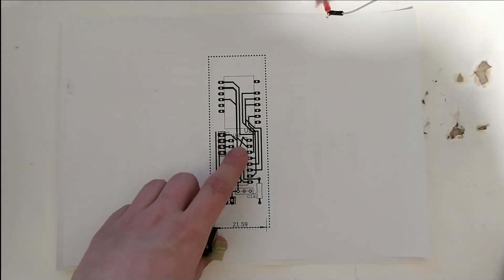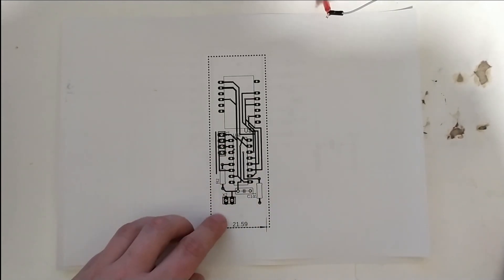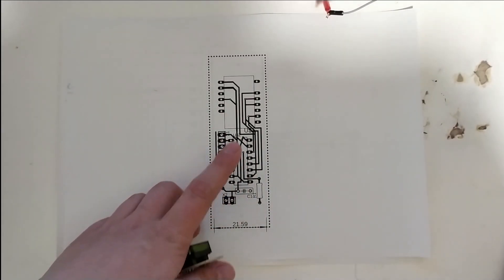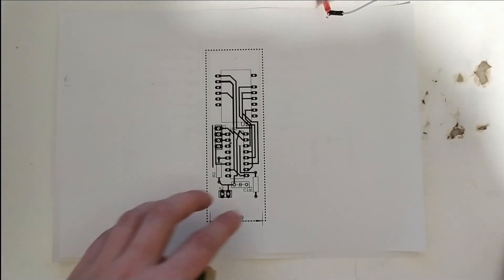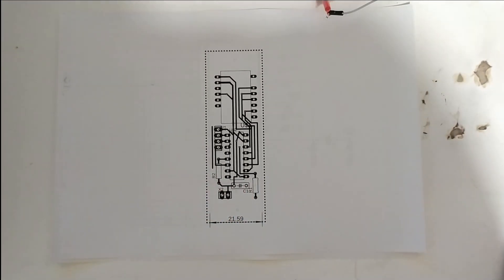So this has a couple of bridges on it, but the circuit besides that is relatively simple. Input here, power input here, seven-segment and chip here, and then two resistors and the capacitor. That's all about it.